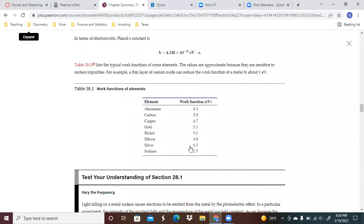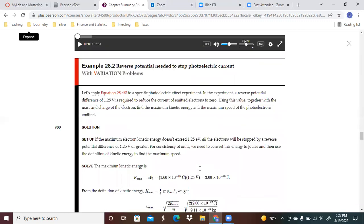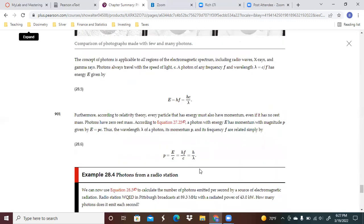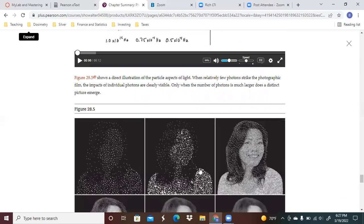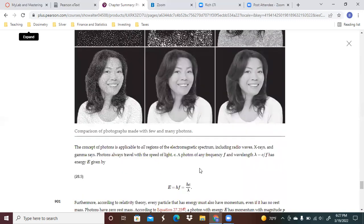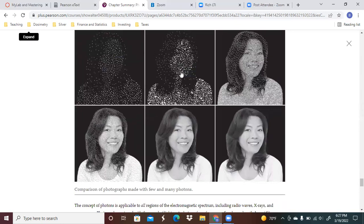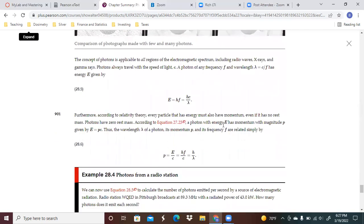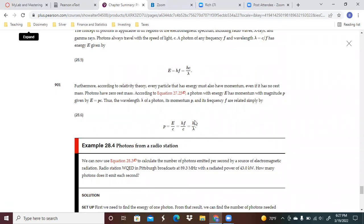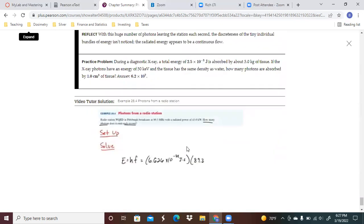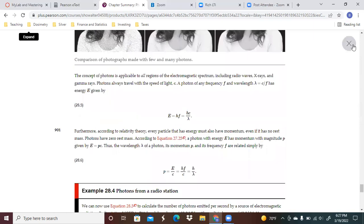You've got several different work functions here for several different types of materials. You can see here the comparison of photographs made with a few and many photons. Here you have the definition of energy for photons. Here you have the definition of momentum and how that relates to the energy. Those are all important concepts to remember.